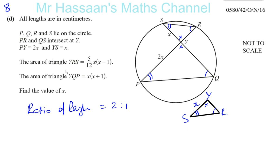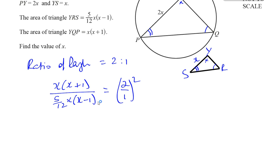We know the area of the two triangles. YQP is the bigger one. So the ratio of the areas - that's the area of the big triangle YQP over the area of the small triangle YRS - is equal to the ratio of the lengths squared. The ratio of the areas is the square of the ratio of the lengths. We have now linked these two equations together and can find what x is. So you have x(x+1) over (5/12)x(x-1) is equal to 4.